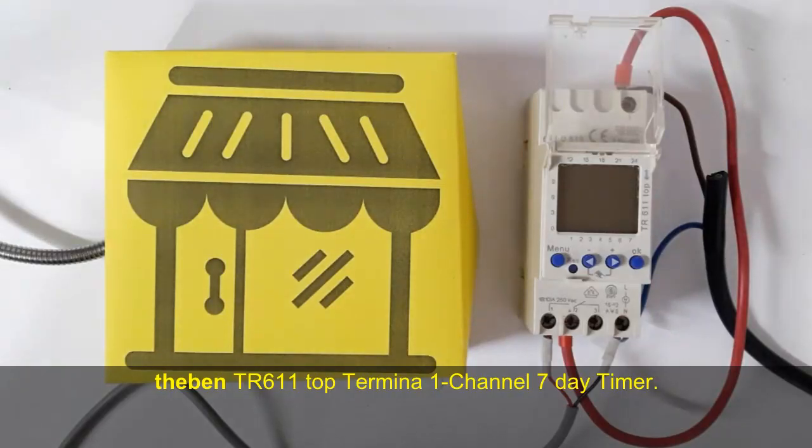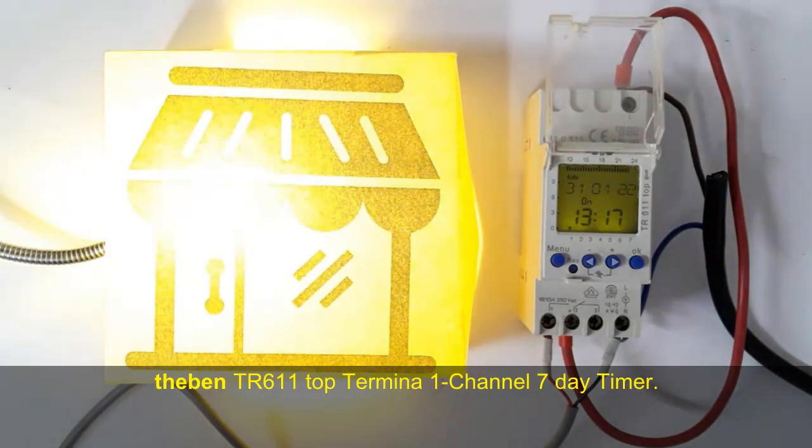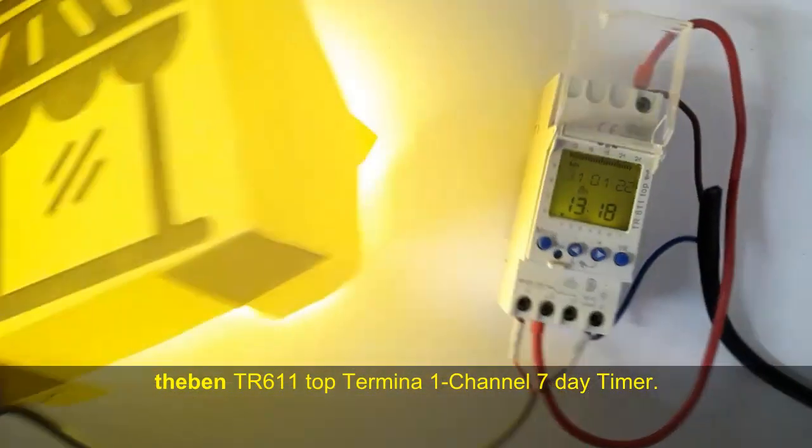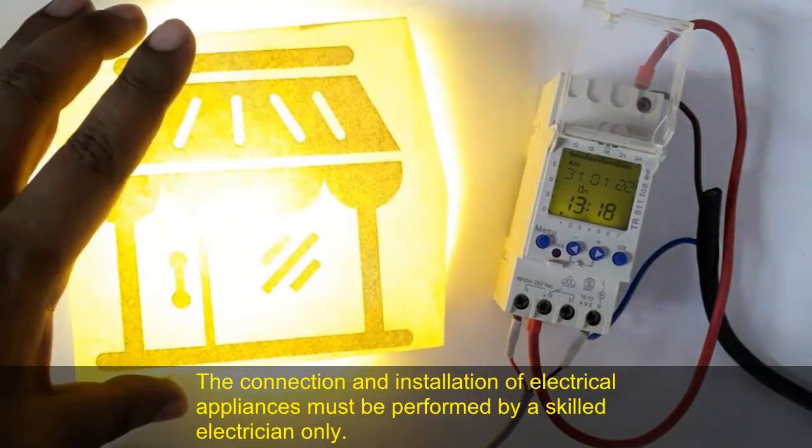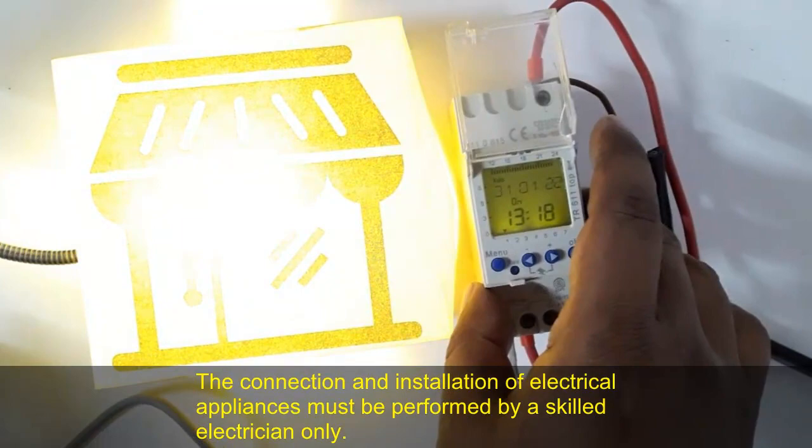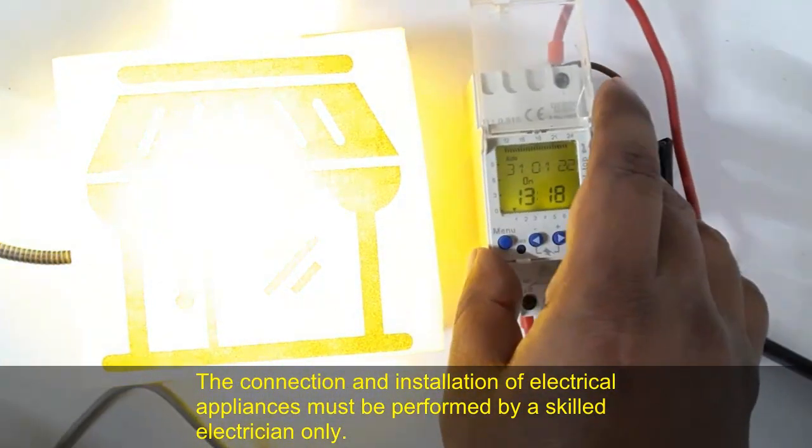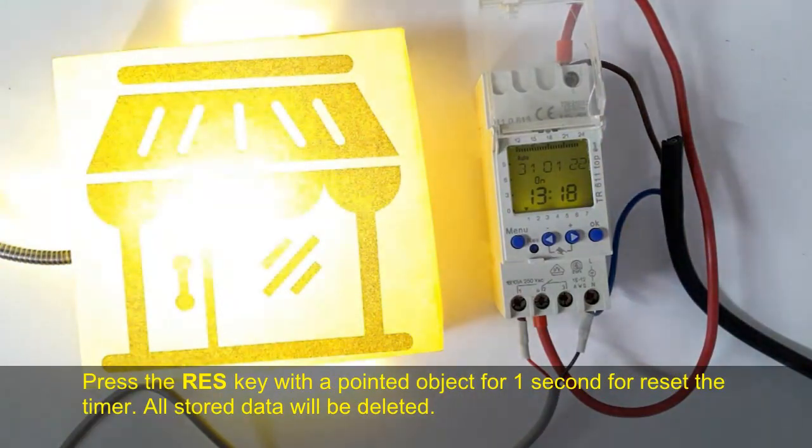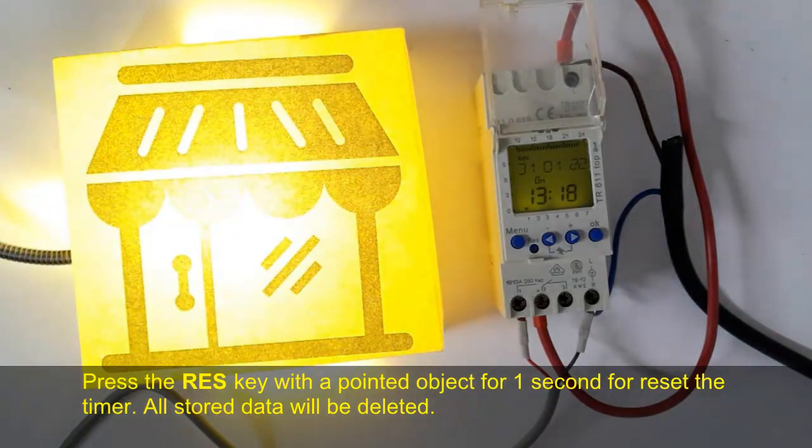Tier 6 double one one channel seven day timer programming and operation. The connection and instruction of electrical appearance must be performed by a skilled electrician only. First, press the reset key with a pointed object for one second to reset the timer.